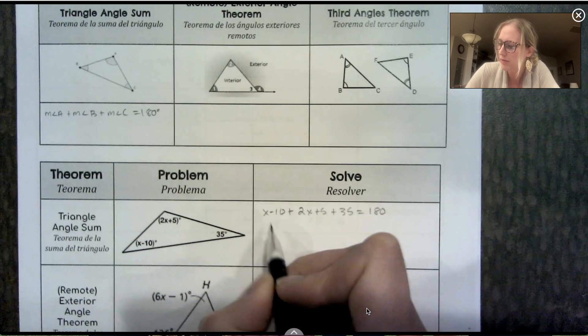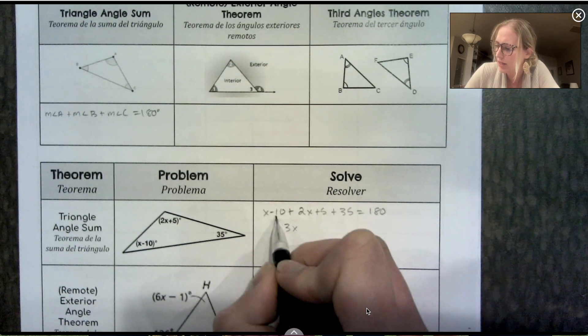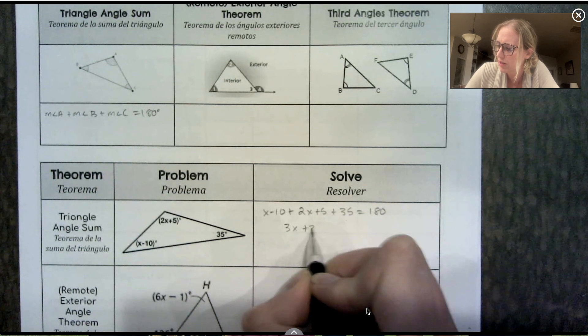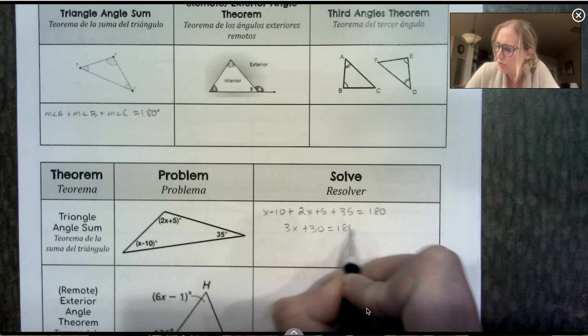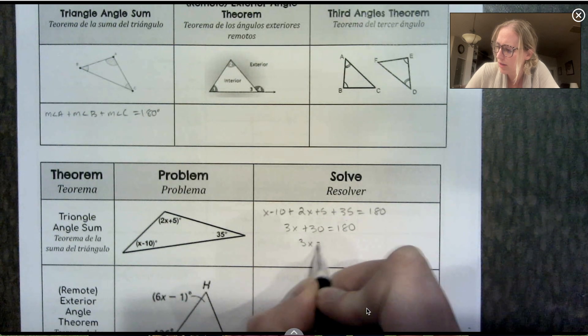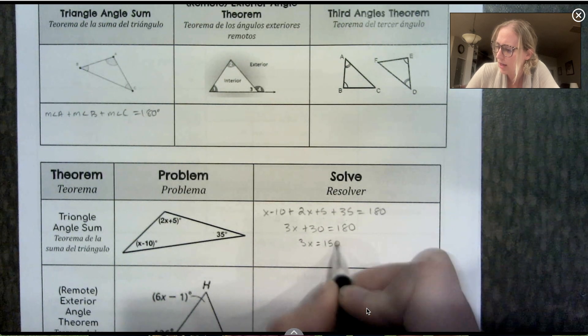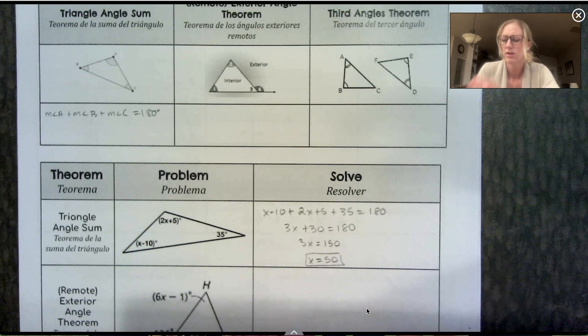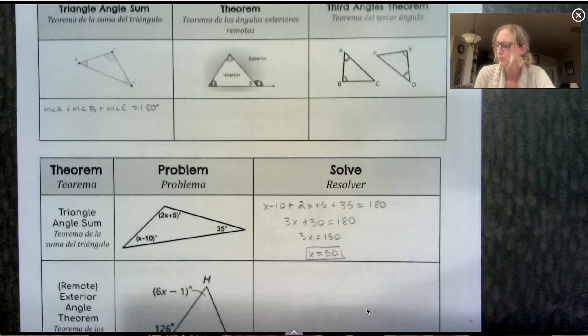Combine some like terms here. So I've got 3x total, negative 10 and 5 is negative 5 plus 30 is 30. Subtract 30 and divide by 3 to find x.